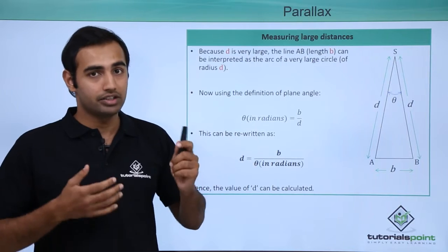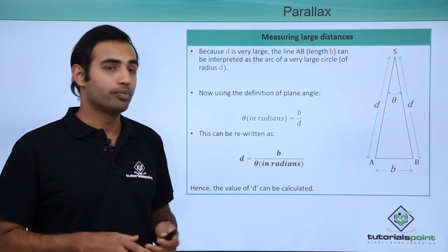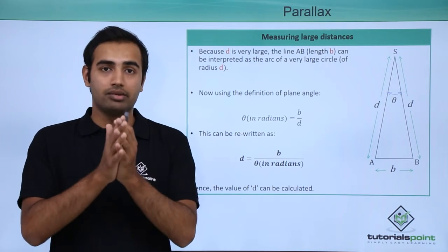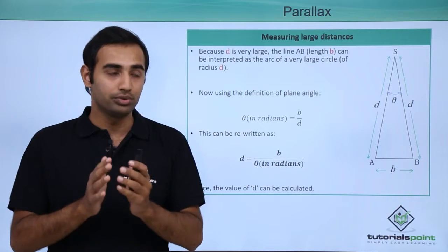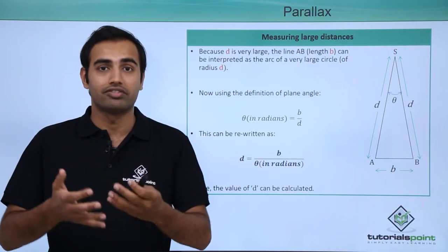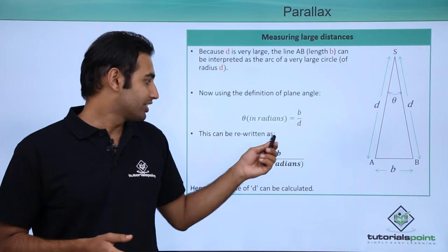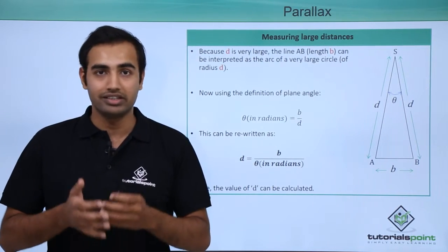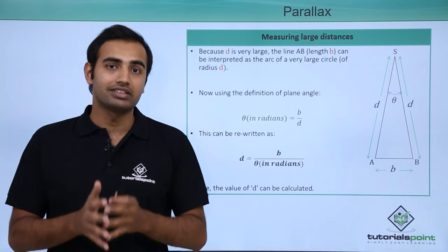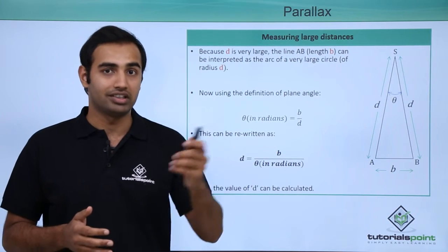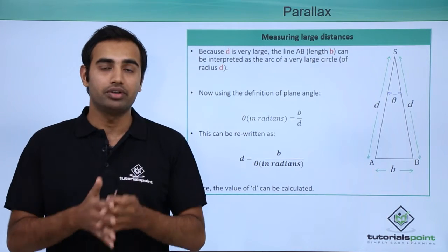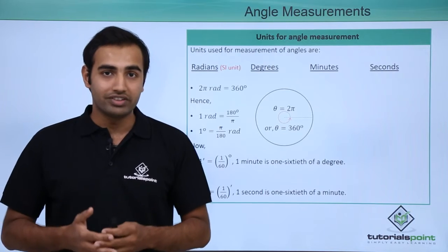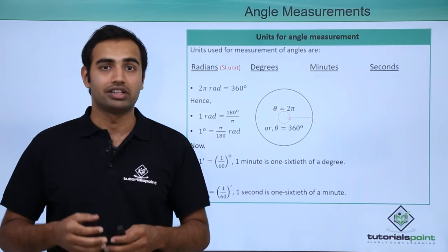Once I have done that I can rearrange this equation and I can obtain my small d simply as b upon theta. Remember the value of parallax angle must be put in radians because in radians only this equation or this definition of angle is valid. So once I have done that the value of d can be calculated because measuring small b and measuring theta is very easy. We will discuss an example on this concept in the subsequent section but first we will talk about different units of angles which are present in physics. In physics we have four main units that we use for angles: radians, seconds, degrees, minutes, and seconds.